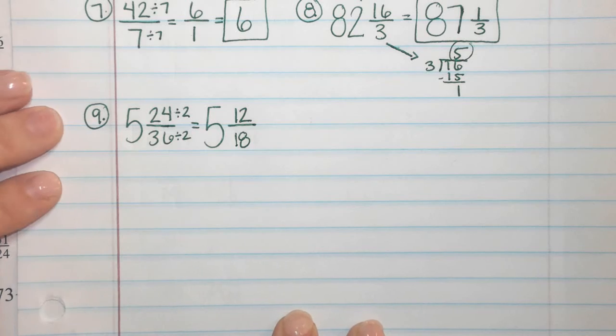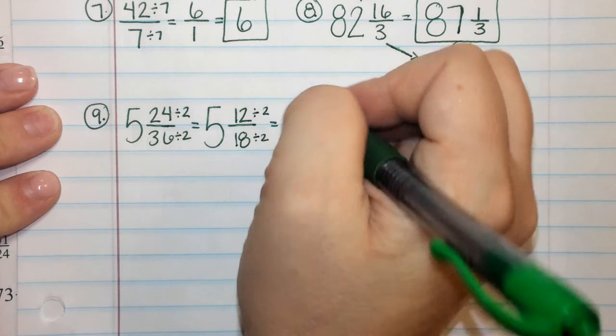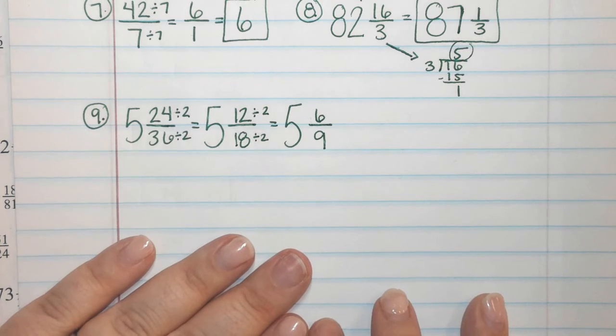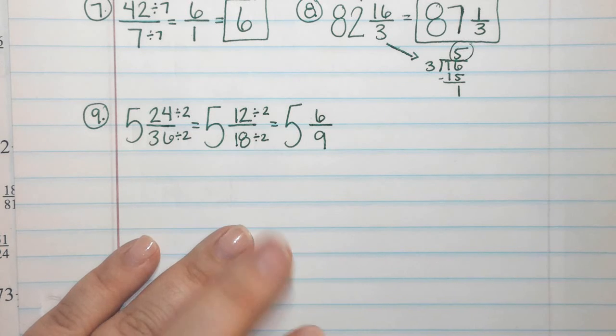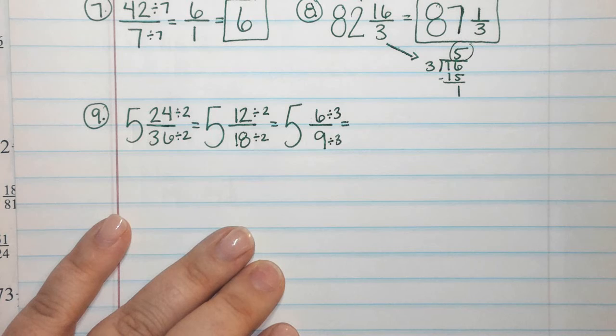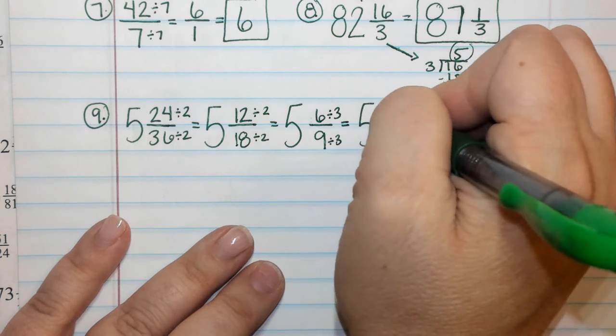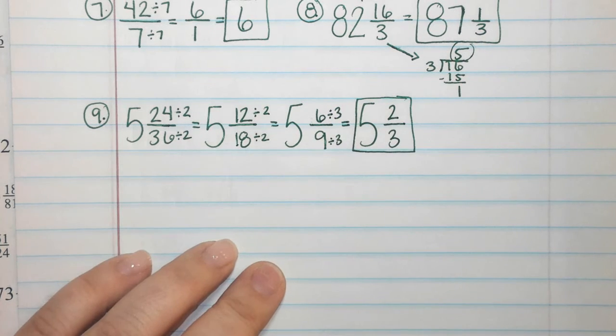Is this a good way to leave my answer? No. What should I do now, Braden? Divide by 2 again. All right, so I still have 5. 12 divided by 2? 6. 18 divided by 2? 9. Is this a good way to leave my answer? No. Why not? What's wrong with this answer? Easton? I can divide these by 3. Remember, we like 2. We always want to check on 3. So I have 5. 6 divided by 3 is 2. 9 divided by 3 is 3. So I get 5 and 2 thirds. And that one is done. I'm going to go ahead and circle it for us so we know it's done.